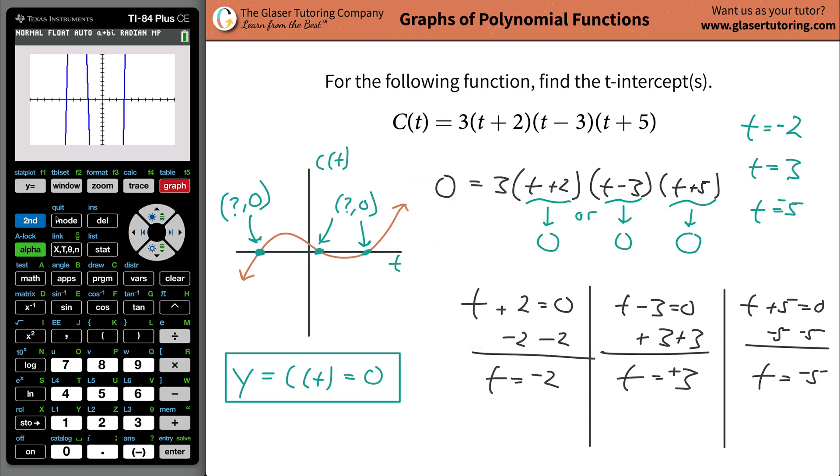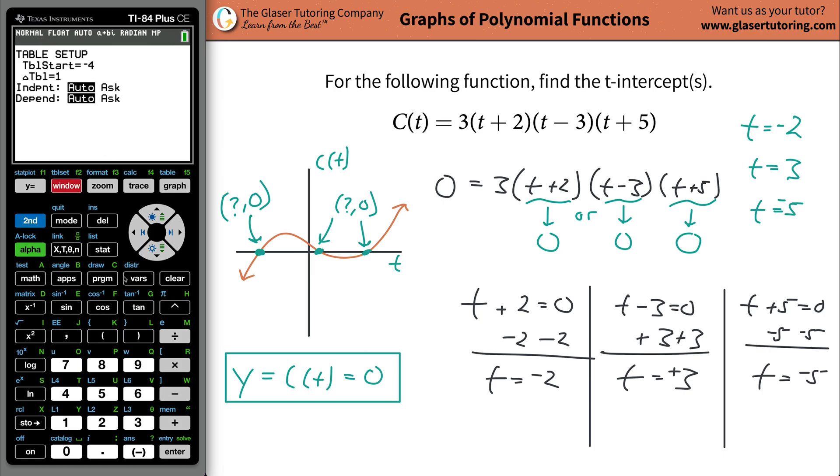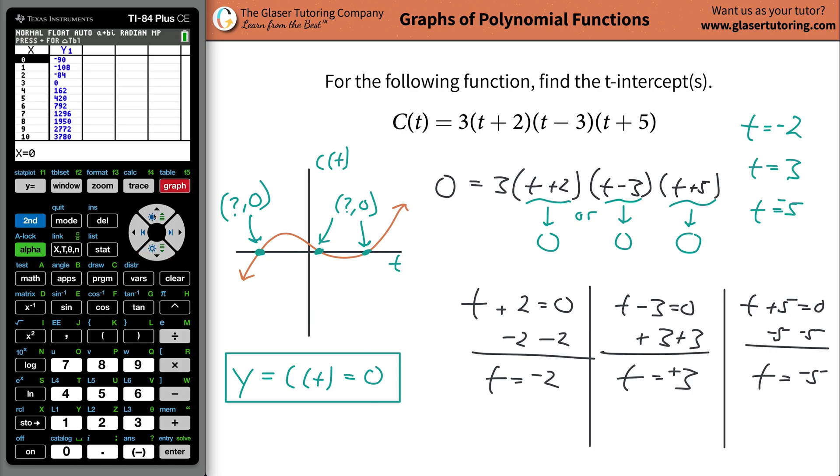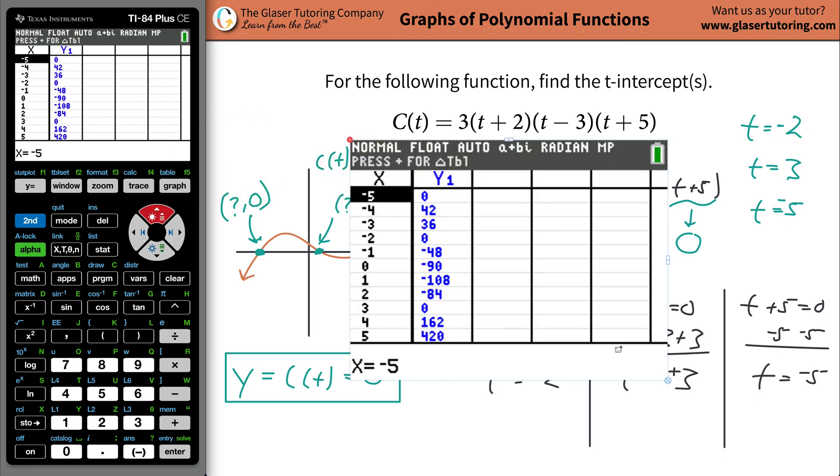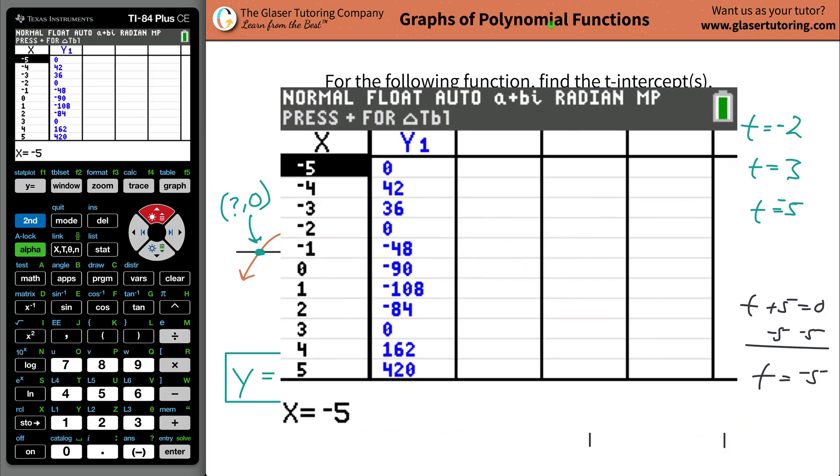Now, if you still don't trust the graph, if you're like, well, I want to see it exactly, use your table. Hit second table. Also, if your table doesn't look kind of like this, just go to second table set. You can start the table at zero. Just start it at zero and then increment it by one unit. So it should just be a one. Hit enter. And now go to second table or second graph again. Now watch. Let's get everything in the screen.